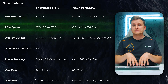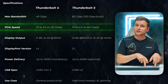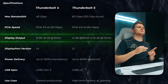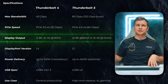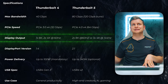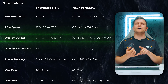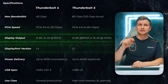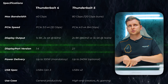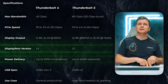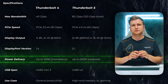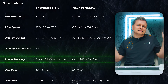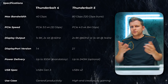The PCIe lane speed has been upgraded from PCIe Gen 3x4 to PCIe Gen 4x4. For display output, previously it was one 8K display at 60Hz or two 4K at 60Hz; now Thunderbolt 5 supports two 8K at 60Hz or three 4K at 144Hz. DisplayPort version goes from 1.4 to 2.1, and power delivery increases from up to 100 watts on Thunderbolt 4 to up to 240 watts on Thunderbolt 5.